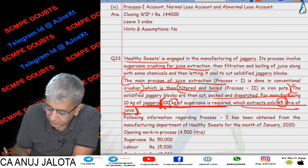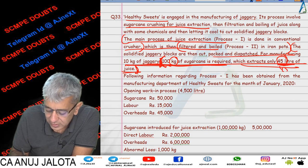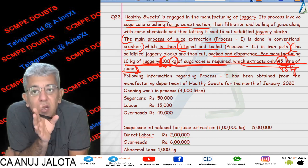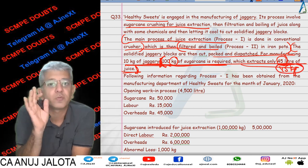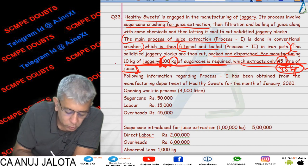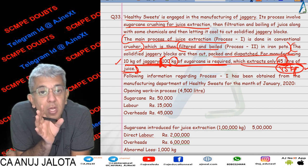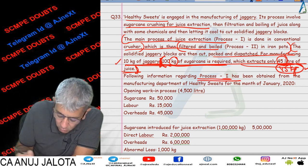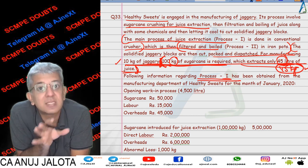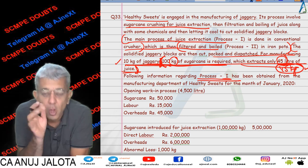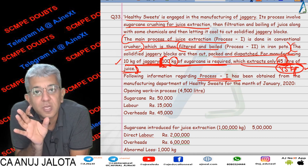So therefore, this 45 liters is also 45 kgs. From 100 kgs of sugarcane, 45 kgs of juice is produced. From this 45 kgs of juice, only 10 kgs of jaggery will be produced — but that happens in Process 2. This question is all about Process 1 only, so the jaggery production data is of no use to us here. The only useful data is: when you input 100 kgs, how much juice comes out — 45 kgs.